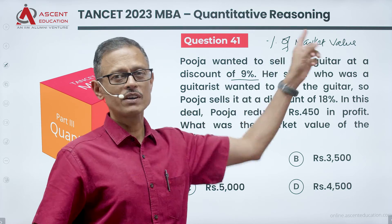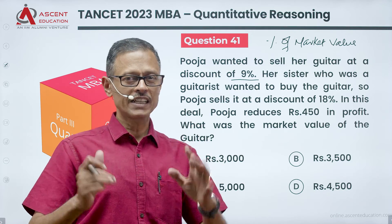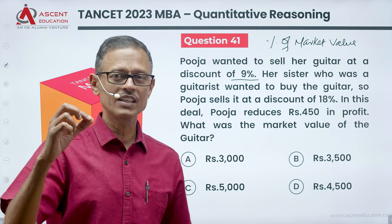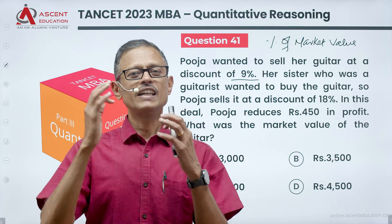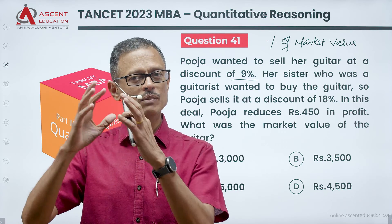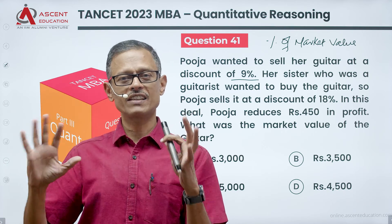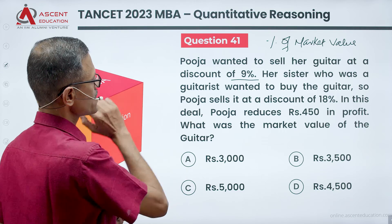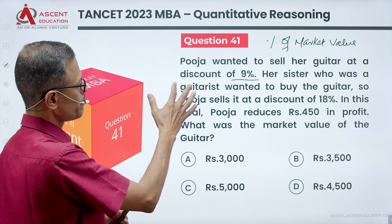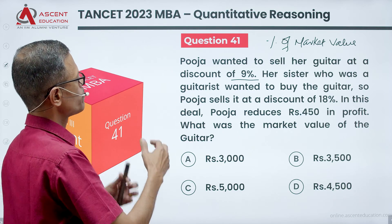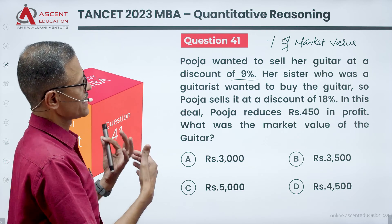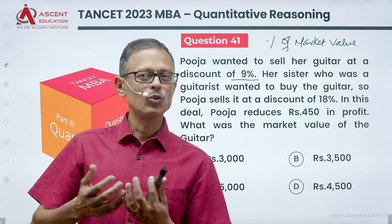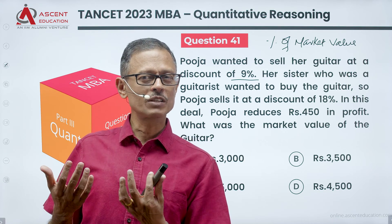Discount is the percentage of the market value. She wanted to sell it at a 9% discount — that is, 9% of the market value is deducted from the market value. Her sister, who was a guitarist, wanted to buy the guitar, so Pooja sells it at a discount of 18%.